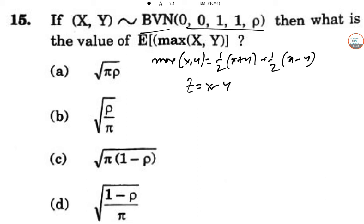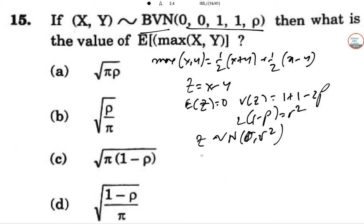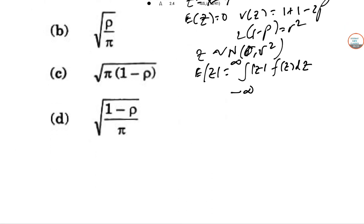Let Z equal to X minus Y. So expectation of Z will be 0. Variance of Z is 1 plus 1 minus 2 rho. So 2 into 1 minus rho is sigma square. Now, Z is following a normal distribution with 0 and sigma square. So expectation of Z is minus infinity plus infinity mod Z, F of Z, DZ.